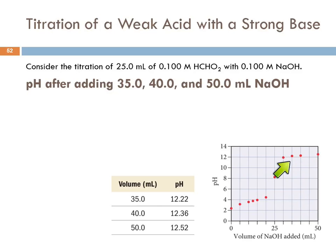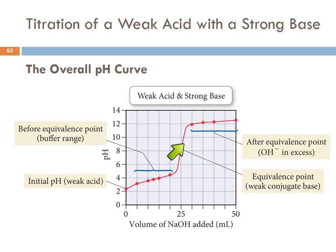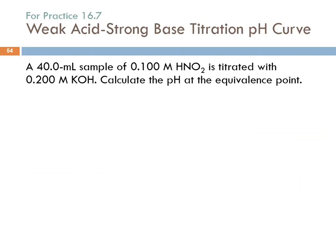The overall pH curve for weak acid with strong base: after adding some sodium hydroxide, you're in a buffer region. At the equivalence point, we treat the solution as a weak conjugate base. Past the equivalence point, we're looking at excess hydroxide.